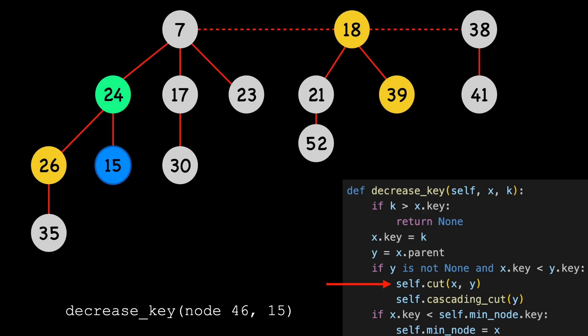Back to our example, we execute the cut function. We move 15 to the end of the root list, which is how we coded the merge with root list function. Next, we call the cascading cut function.